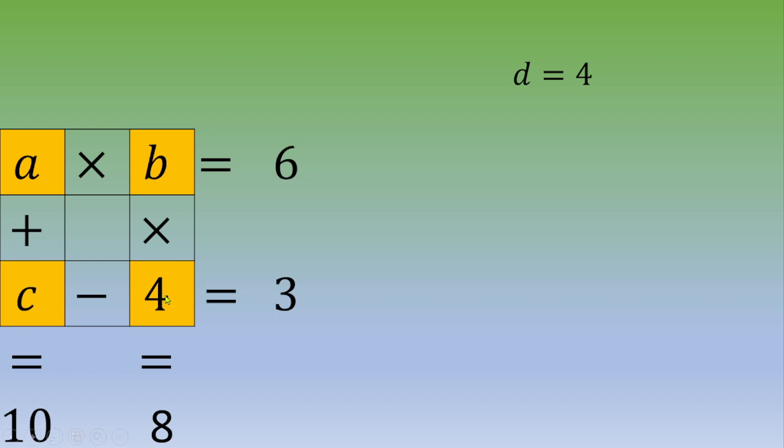So, I plug 4 instead of D because I just know this value. Now, let's focus, for example, on row number 2. C minus 4 equals 3. So, now, C equals 7.